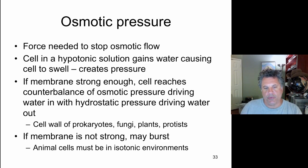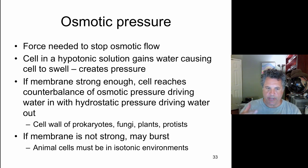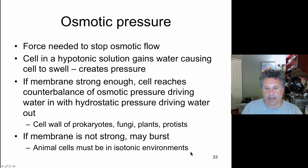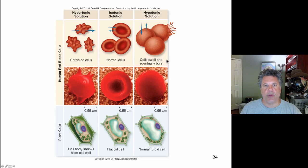Cells with cell walls are able to withstand osmotic pressure when placed in a hypotonic solution by counterbalancing with hydrostatic pressure. But animal cells are in trouble if placed in a too hypotonic solution — they will swell and can burst. So in normal circumstances, organisms create isotonic environments for animal cells. Let's look at this in the case of red blood cells.